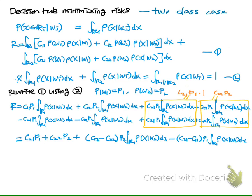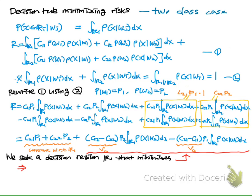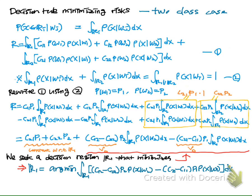The first two terms of the rewritten total risk equation are constant — they are not affected by region 1 and do not influence our decision. The remaining two terms are affected by the decision boundary. Our goal is to find the decision region R1 that minimizes these terms. We define a discriminant function G(x) inside the integral; by finding all X where G(x) is less than zero, we minimize the total risk.